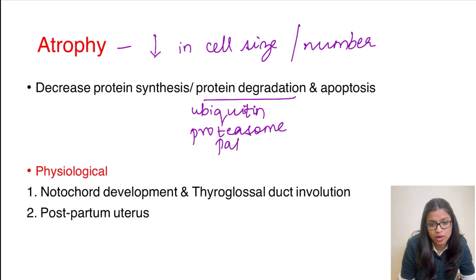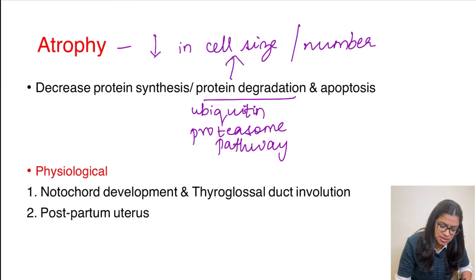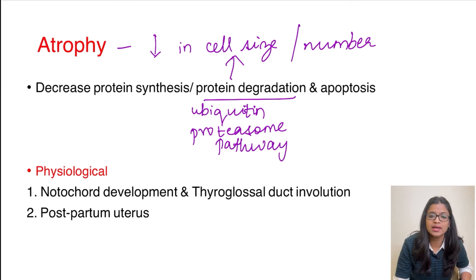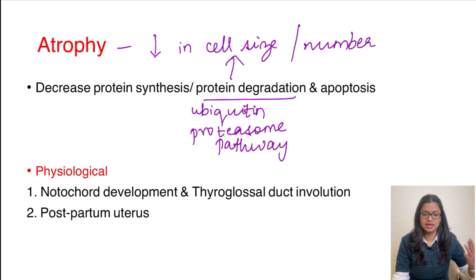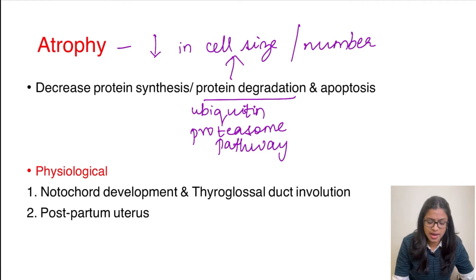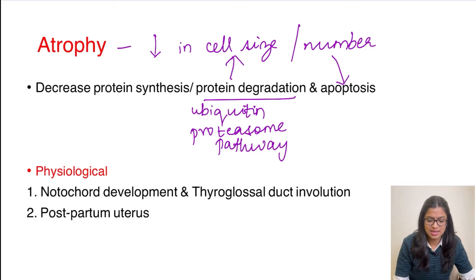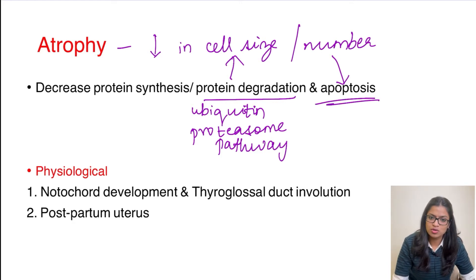The ubiquitin proteasome pathway results in the decrease in cell size. For cell number to decrease, cells must die — and this occurs by a form of cell death called apoptosis. Apoptosis results in the decrease in cell number in atrophy.